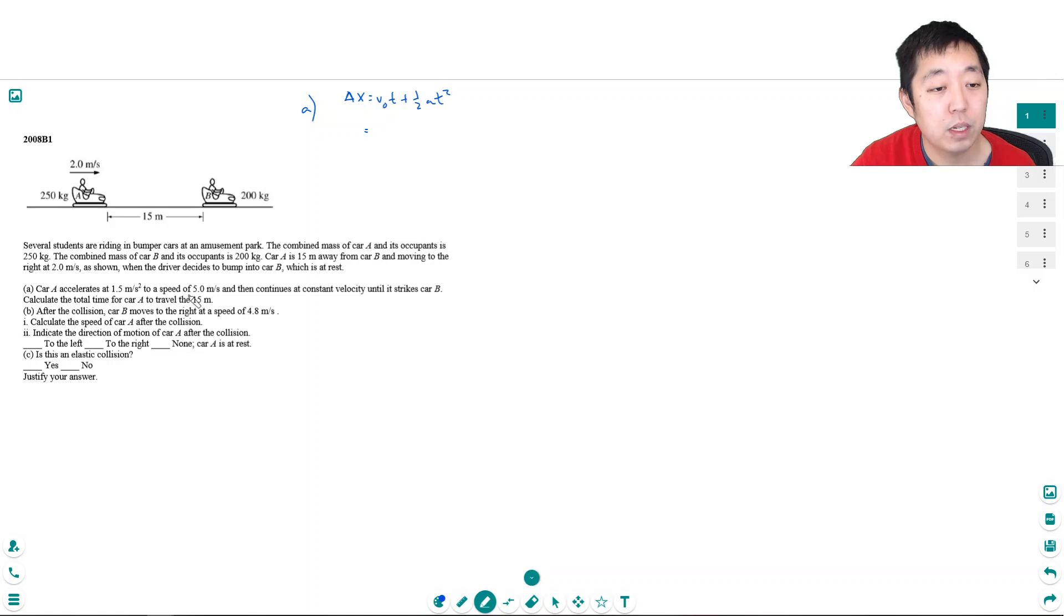His initial velocity is 2 meters per second. I've got to multiply by time. Now the time is the time it takes to accelerate up to 5 meters per second. So he starts at 2 meters per second and he gets up to 5 meters per second accelerating at 1.5 meters per second squared. Let's write all that out.